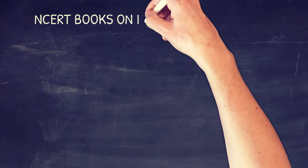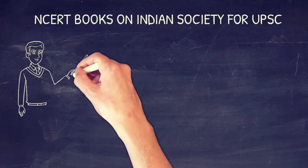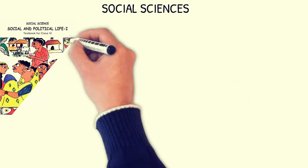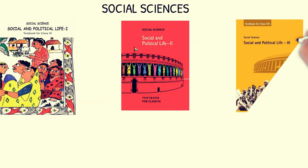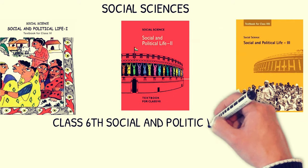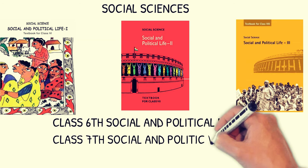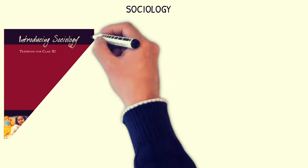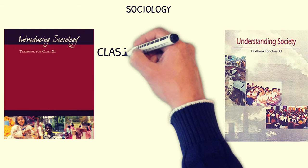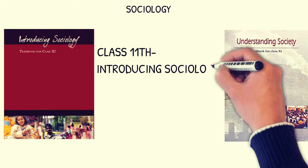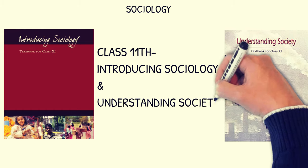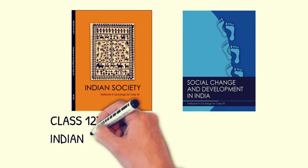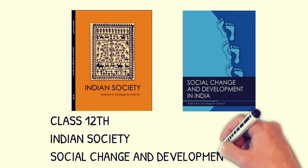NCERT books on Indian Society for UPSC exam — Social Sciences: Class 6th Social and Political Life 1, Class 7th Social and Political Life 2, Class 8th Social and Political Life 3. Class 11th Introducing Sociology and Understanding Society. Class 12th Indian Society and Social Change and Development in India.